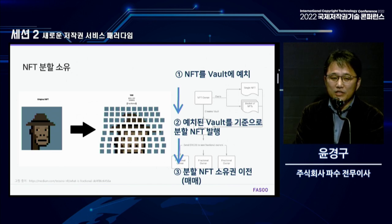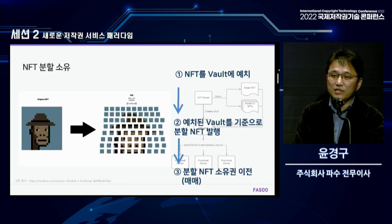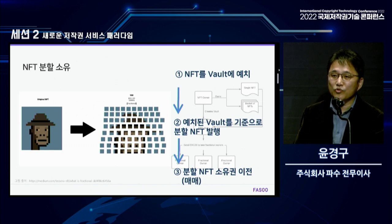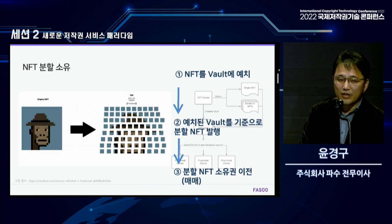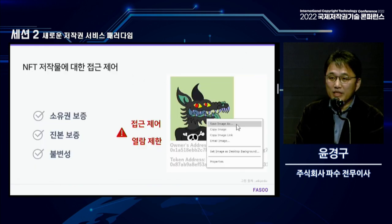The original token can be deposited in a vault. You can issue a split fraction, and split fractions can be issued as well. There is only one original token, but it can be split into different parts for transactions.